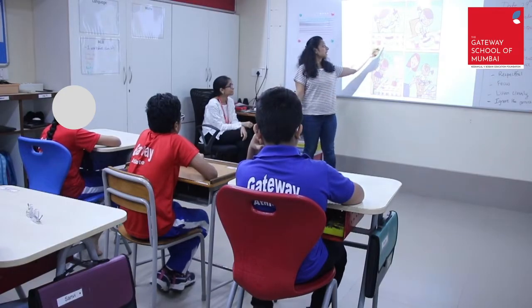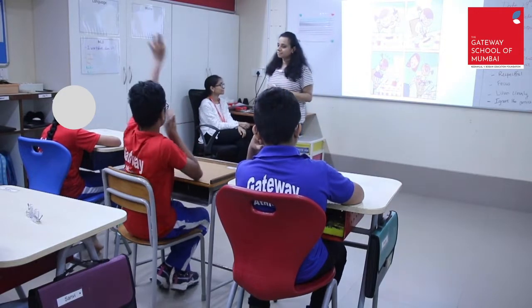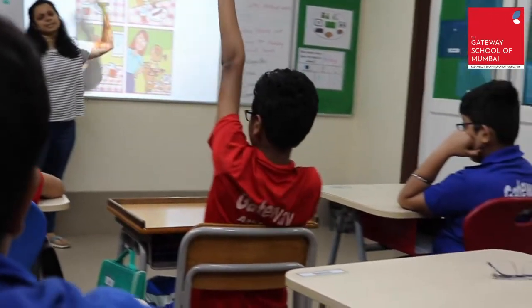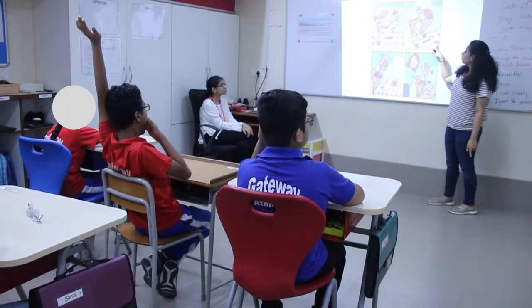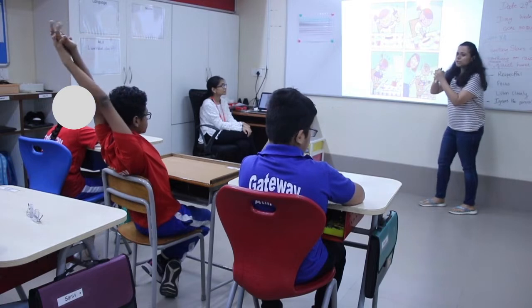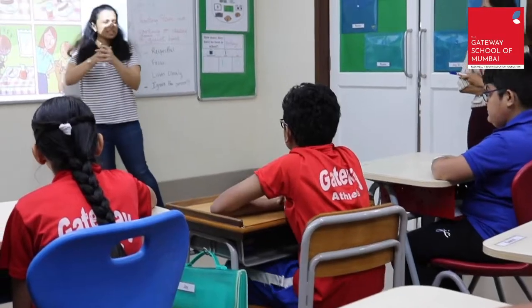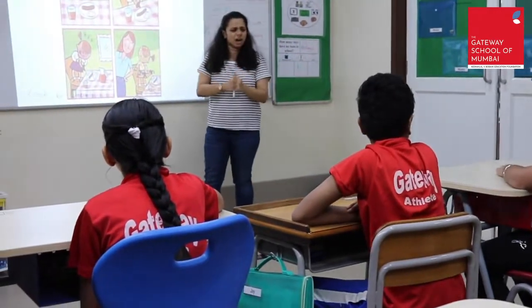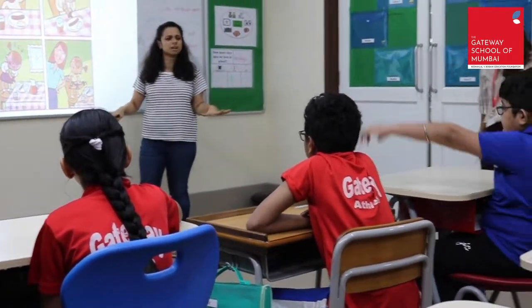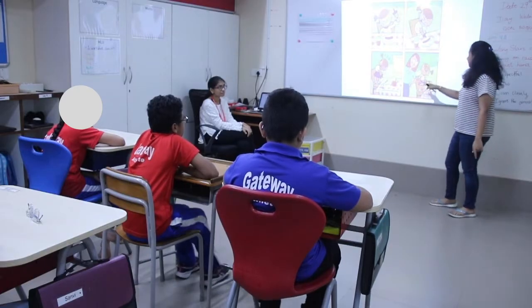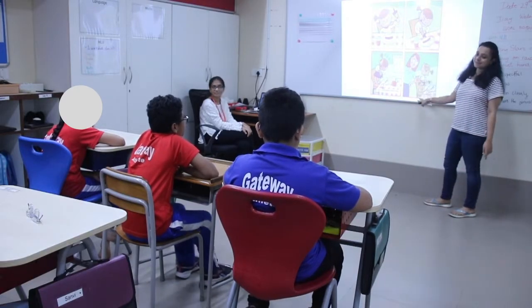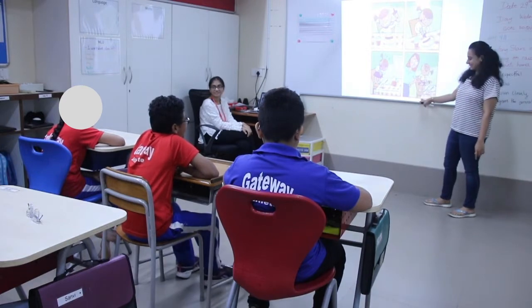So Emma decided to make some breakfast for herself. She loves to eat ketchup with her sausage. Then she got the ketchup bottle and Emma tried to squeeze it so that the ketchup comes out. She squeezed the ketchup bottle really hard and the ketchup just wouldn't come out. Finally, she squeezed the bottle so hard that all the ketchup got sprayed on her and she made a mess.